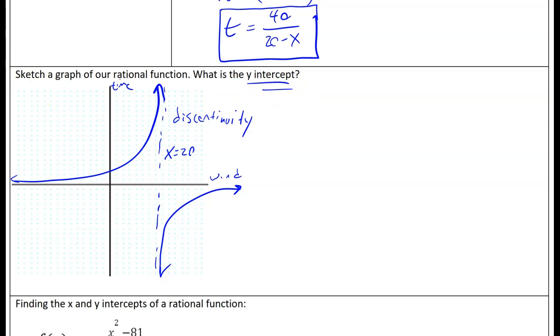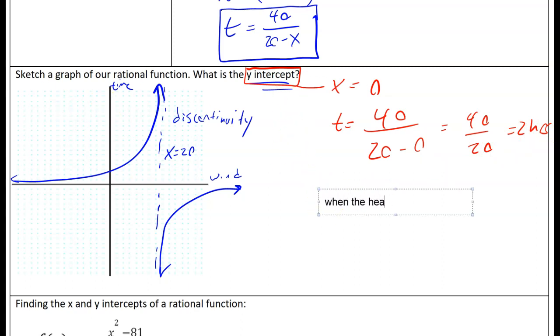What I'm asked for in this question is the y-intercept. My y-intercept is where x is equal to 0. I can just plug in 0 here. I'd have t equals 40 over 20 minus 0, which ends up being 40 over 20, which is our 2 hours. This means that when the headwind is 0 miles per hour, it takes me 2 hours to travel 40 miles.